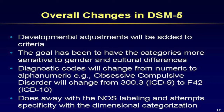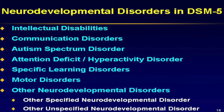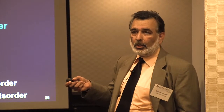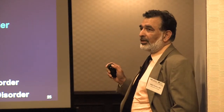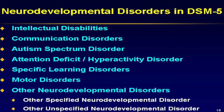A substantial effort was made in terms of introducing dimensions. This is chapter one: neurodevelopmental disorders in DSM-5. It addresses intellectual disabilities, communication disorders, autism spectrum disorder, attention deficit and hyperactivity disorder, specific learning disorders, motor disorders, and other neurodevelopmental disorders. These are the entities in this particular section of DSM-5.